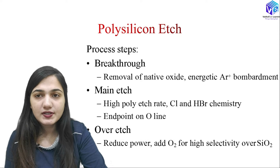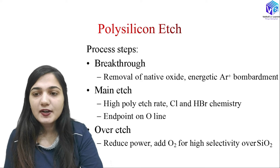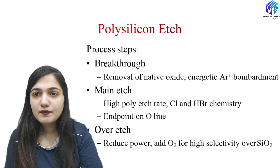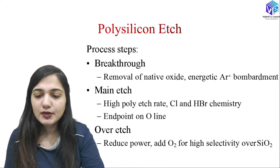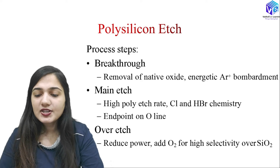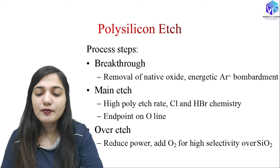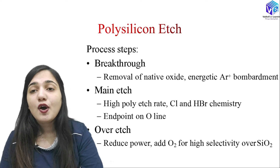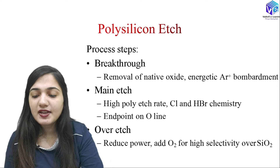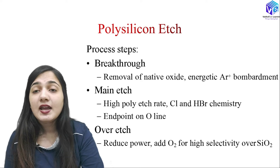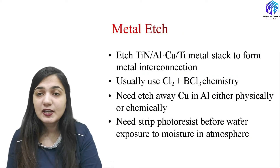Now coming to the process steps. In the breakthrough step we are removing the native oxide layer using energetic argon ion bombardment. The main etchants here are chlorine plus HBr. The endpoint is calculated with the help of oxygen atoms. In the case of overetch, we have to reduce the power and add oxygen gas for high selectivity over SiO2, so that the SiO2 will not be etched out during overetch.